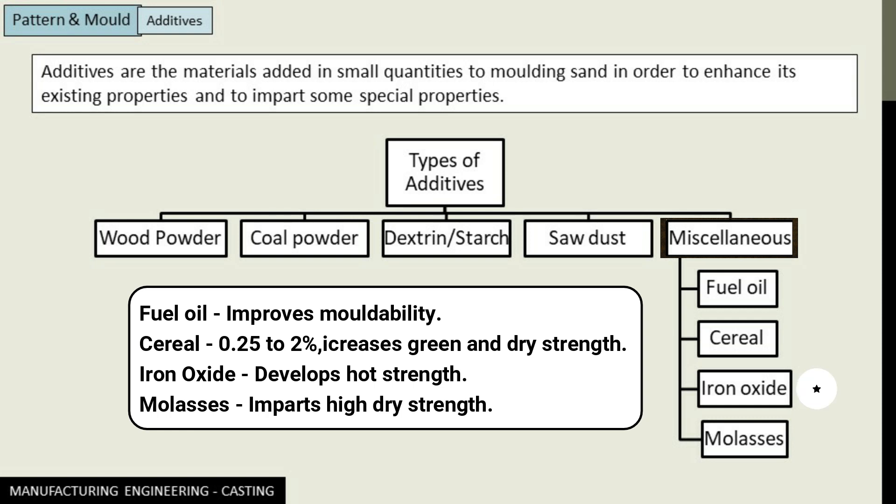Next we have iron oxide as a miscellaneous additive, which helps in increasing the hot strength of the molding sand. Last but not least, we have molasses, which is the by-product of the sugar industry. Molasses enhances the bench life of sand and imparts high dry strength and collapsibility to molds and cores.